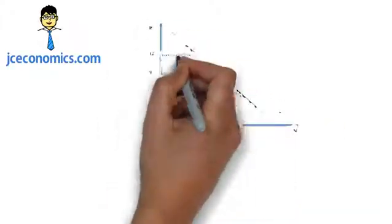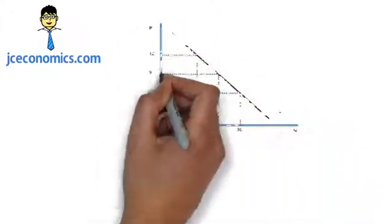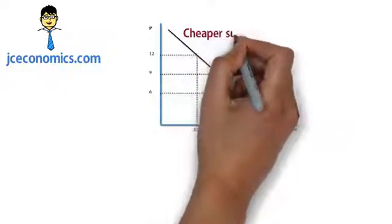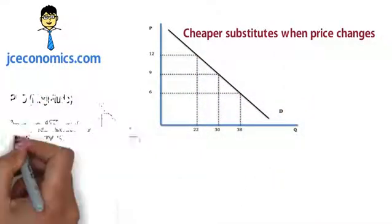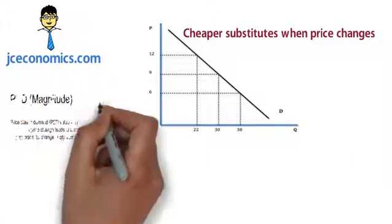Lastly, with the availability of close substitutes, it makes it easier for consumers to switch to cheaper substitutes when price changes. Thus, demand for the item is price elastic.